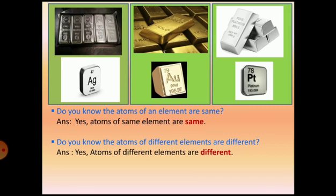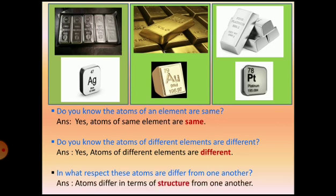But the question arises here: in what respect are these atoms different from one another? How are we saying that gold atoms are different from silver atoms? We require some proof, right. The answer is atoms differ in terms of structure. The gold atom structure is different from that of the silver atom.